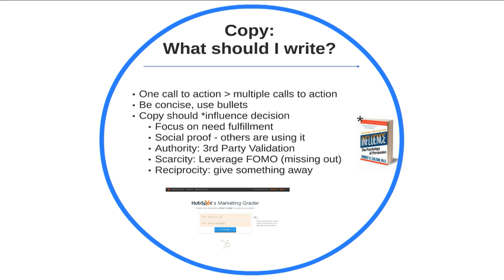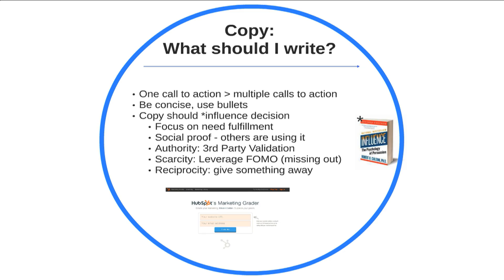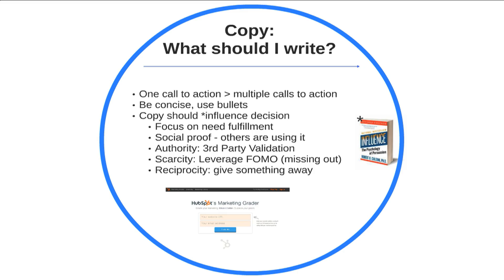Next, social proof — no one wants to be the first penguin in the water. We look for validation that 10,000 people have liked this on Facebook, or that a lot of people have already done the action, so it seems safe and standard. Then authority: third-party validation like 'as seen on TV' or 'featured on CNN' lends reputation and authority to your product. Next, scarcity — fear of missing out, FOMO. It works, so use it. And finally, reciprocity: if you give something away for free, people are more likely to give you their email or follow up with a donation.